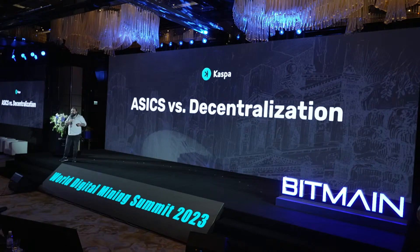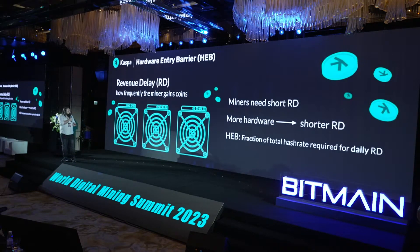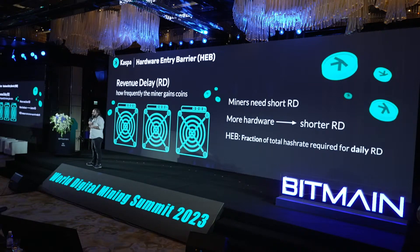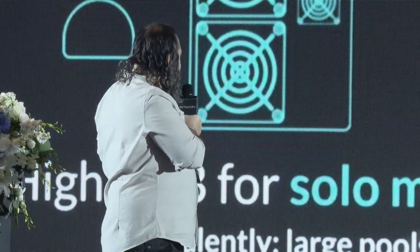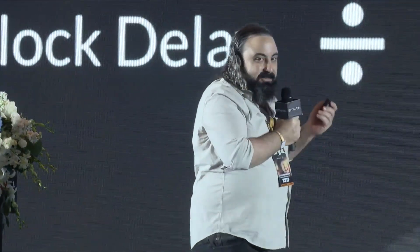So how do ASICs contradict decentralization? The metric I'm going to talk about is what we call the revenue delay. Essentially, it means how long a miner would have to wait before they start to see a block, before they start to see a profit. The hardware entry barrier, which I'll call HEB, is essentially what fraction of the global hash rate you would need to see a block, say, daily.